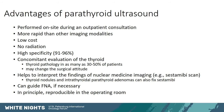The advantages of parathyroid ultrasound are that it can be performed on site during an outpatient consultation, more quickly than other modalities, at low cost, with no radiation, and with high specificity — if you find something that looks like a parathyroid, it probably is. You evaluate the thyroid at the same time, and thyroid pathology is present in a third to half of patients, which can change the type of surgery if thyroid treatment is also needed. It also helps to interpret findings of nuclear medicine imaging such as sestamibi, since thyroid nodules and intrathyroidal parathyroid adenomas can also fix sestamibi. It can guide FNA if necessary and can also be used intraoperatively to help the surgeon localize the parathyroid.